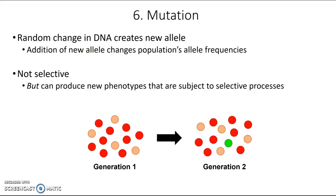Those are the six mechanisms of microevolution you need to know. One more thing: at any given time, most natural populations are experiencing two, three, or even more of these processes simultaneously. All these mechanisms work together to determine allele frequencies in a population and all contribute to evolution. That's it for now — until next time, take care of yourself and take care of each other.